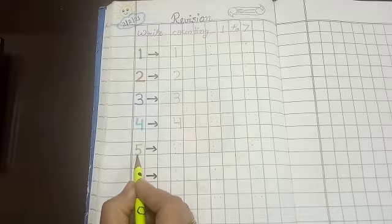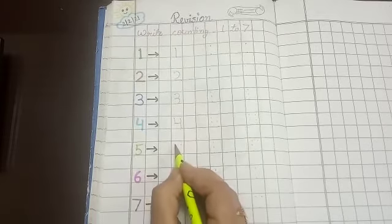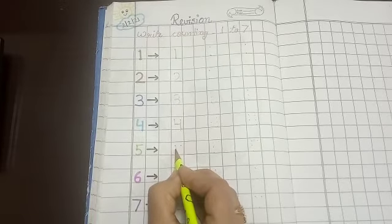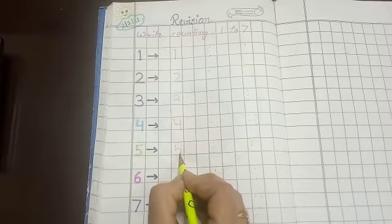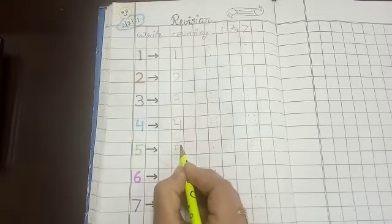Which number is this? 5. 5 bana nikali small one. One ka bada sa stomach curve bana ke and then sleeping line.